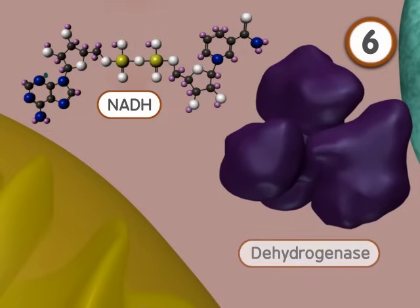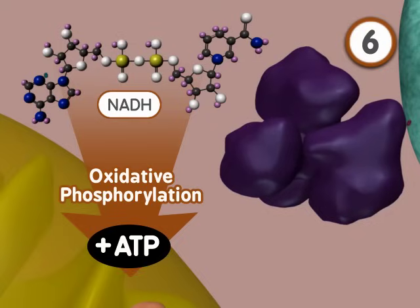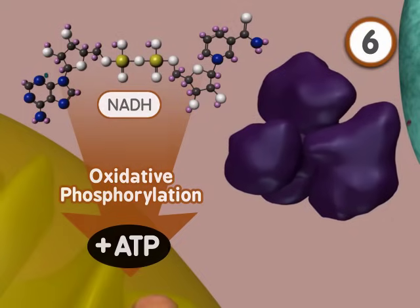NADH is an electron carrier with the potential to produce more ATPs through a process called oxidative phosphorylation. Details of that process are shown in a separate animation.